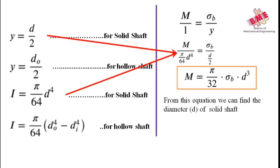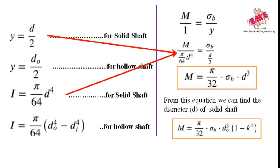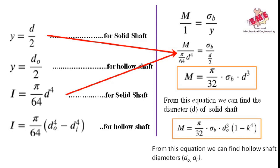For hollow shaft, putting equations 2 and 4 into the flexural formula, we get M = π/32 × σb × D₀³ × (1 − K⁴). From this formula, we can find both the internal and outer diameter of the hollow shaft. This covers shaft subjected to bending moment only.